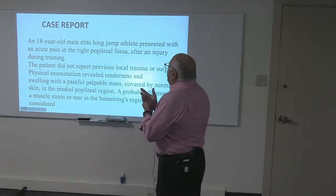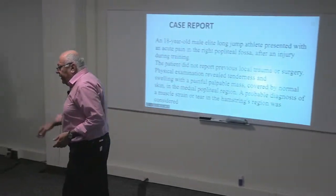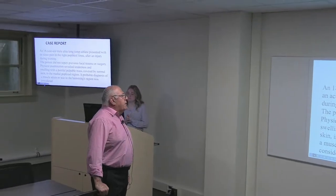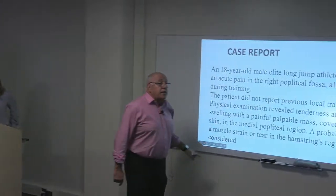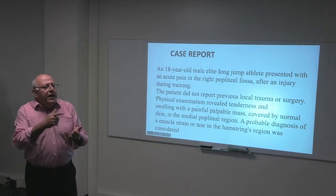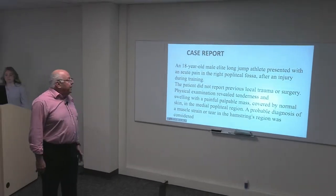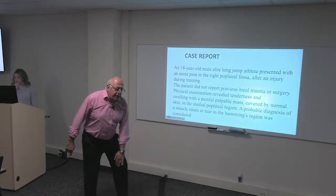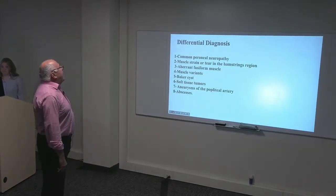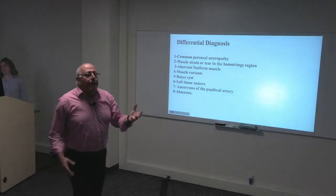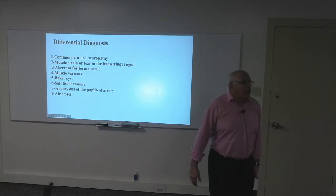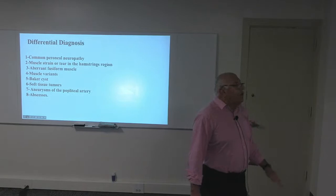One article I like mentions this case report: tenderness, swelling, and a painful palpable mass covered by normal skin. The important thing is the normal skin — no redness. The cardinal signs of inflammation are redness, loss of function, swelling, and fever, but here the skin is normal. The mass was in the medial popliteal region and was diagnosed as a muscle strain or tear of the hamstring. The differential diagnosis of this abnormal mass includes peroneal nerve entrapment on the lateral side.